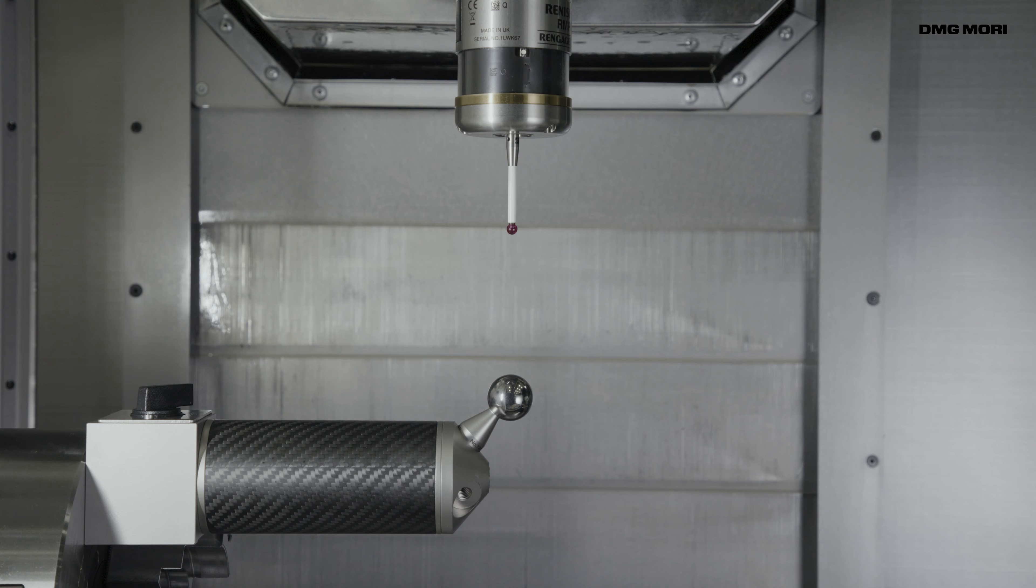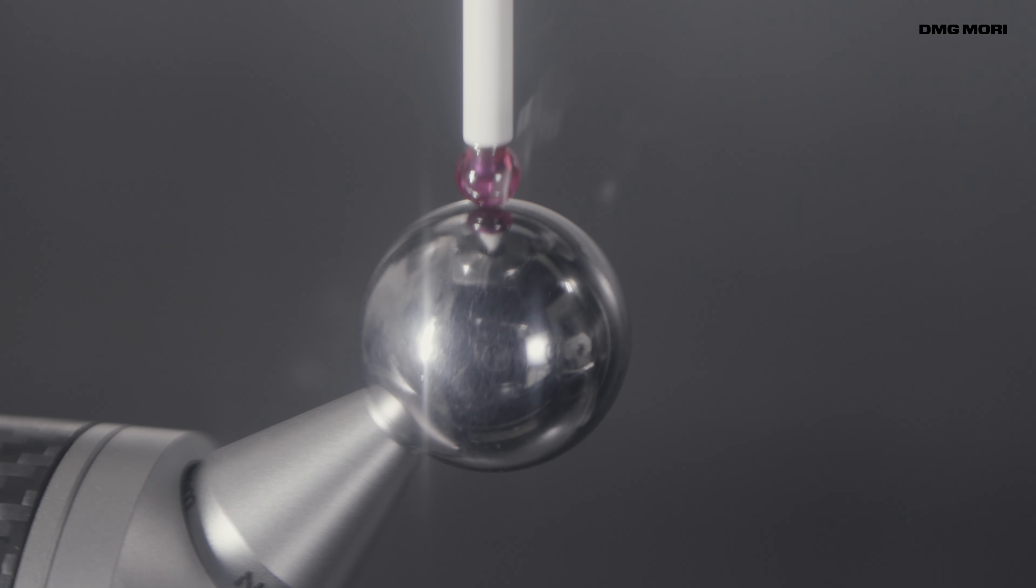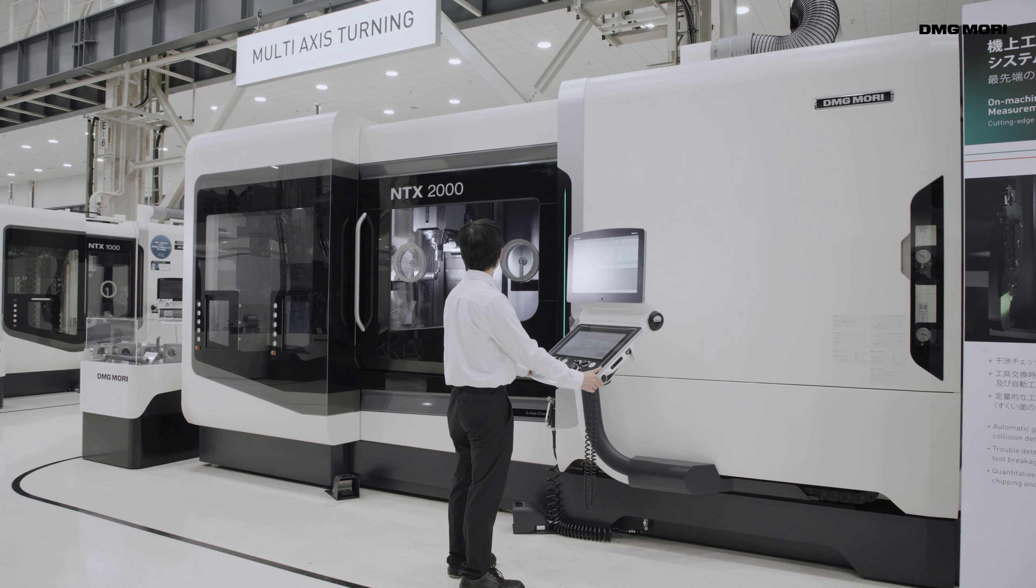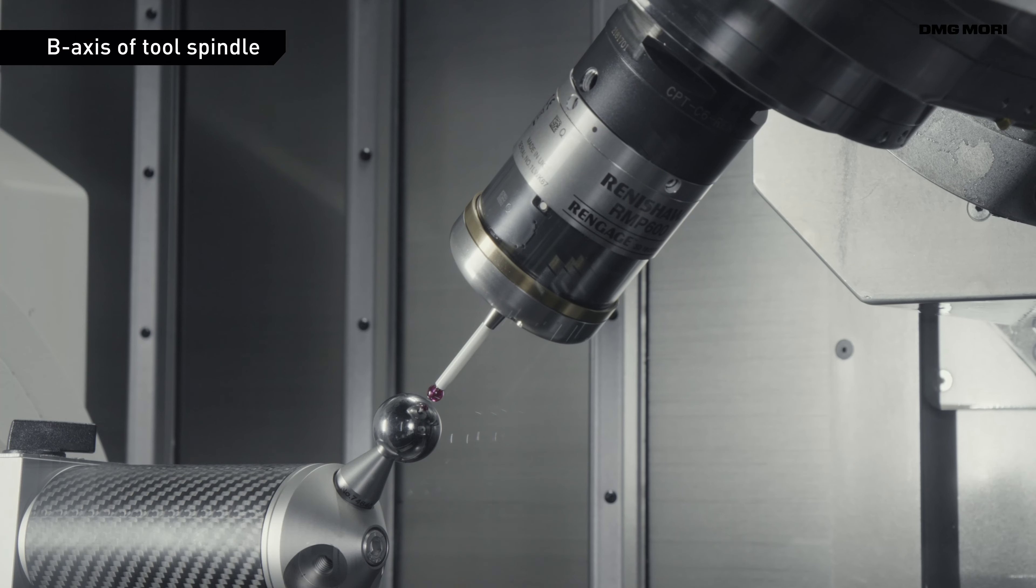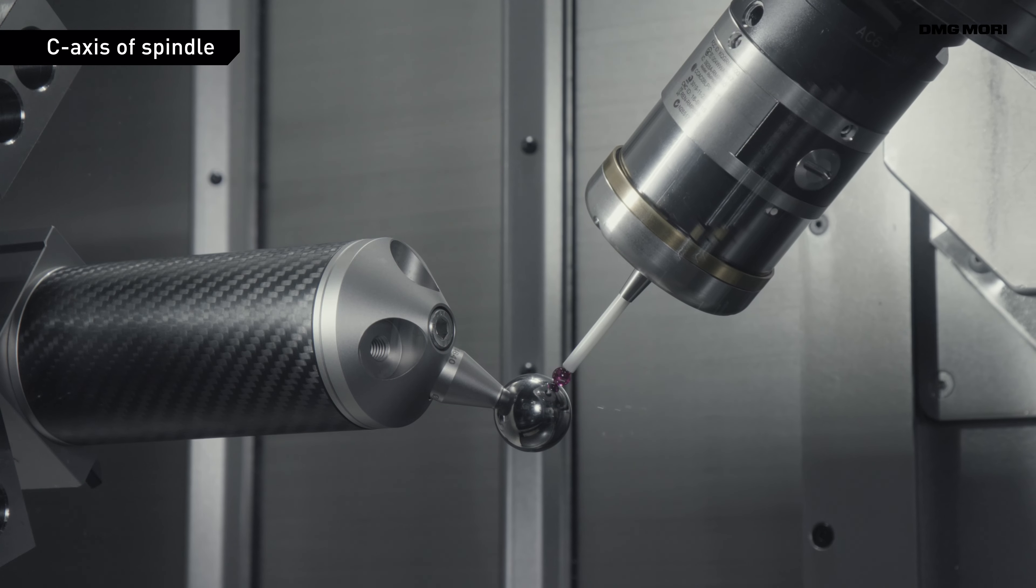The measuring setup is easier and faster than conventional measuring methods using a dial gauge. In the case of NTX-series mill-turned centers, the tool spindle's B-axis and the C-axis are efficiently measured and offset.